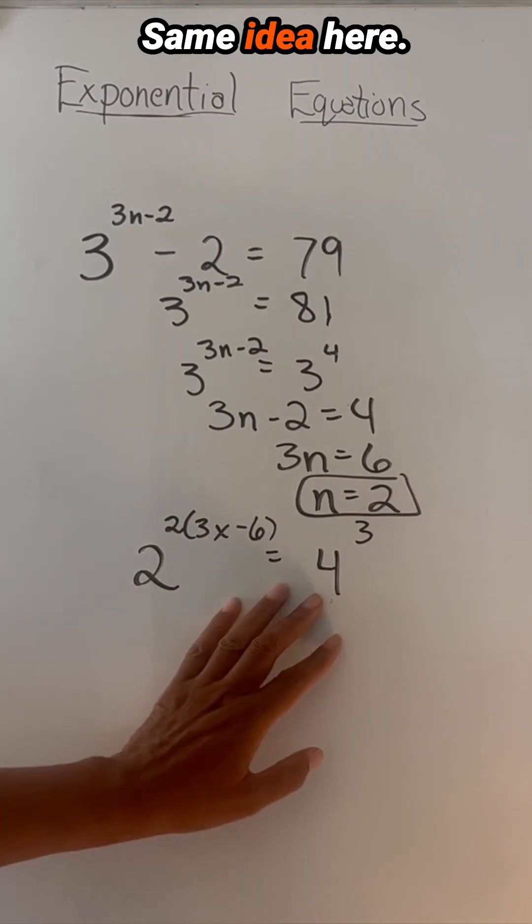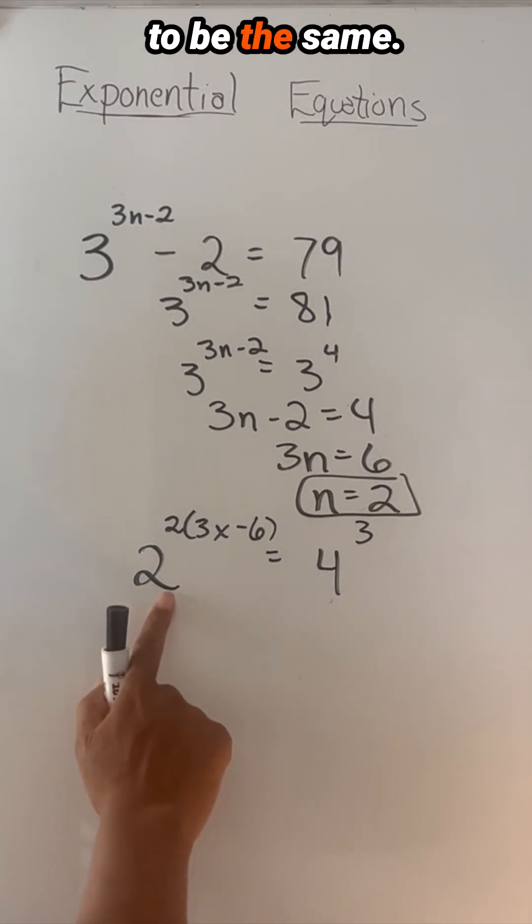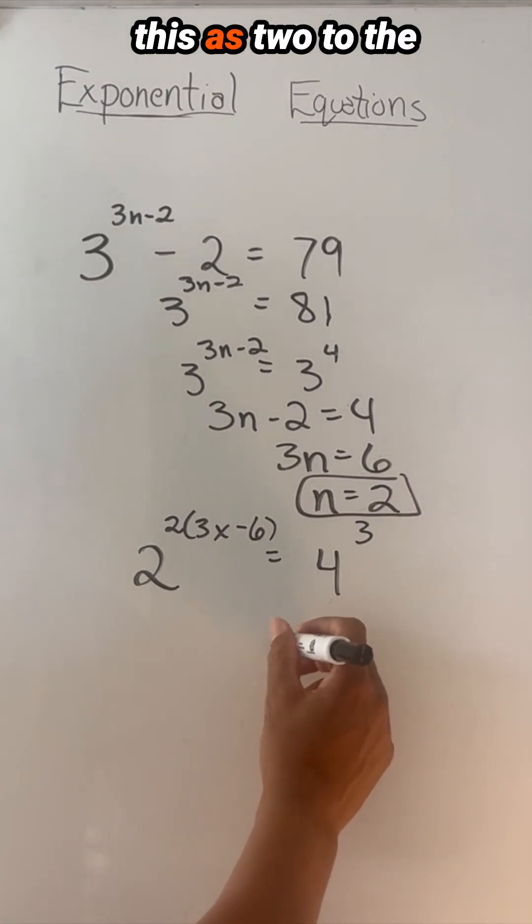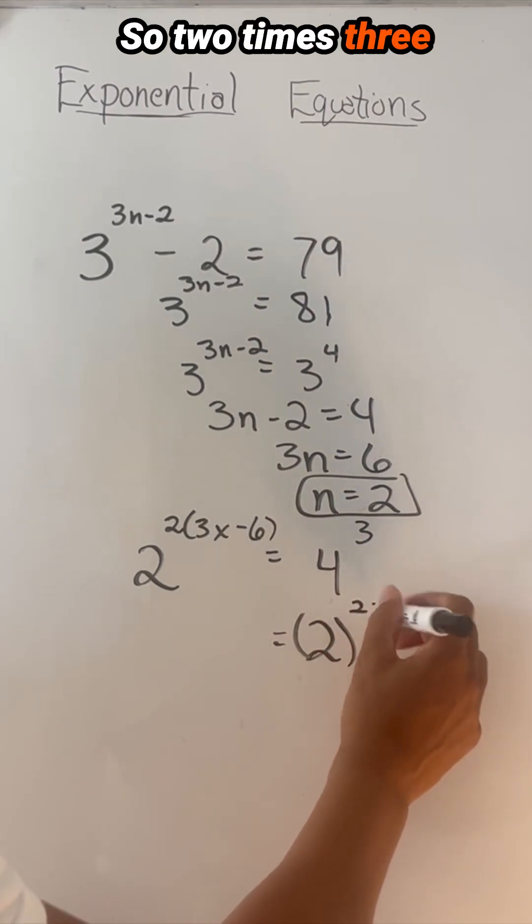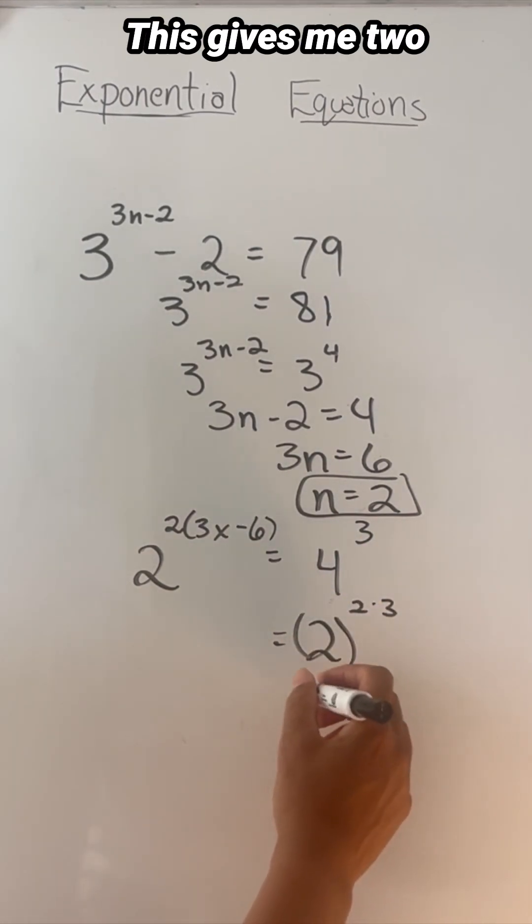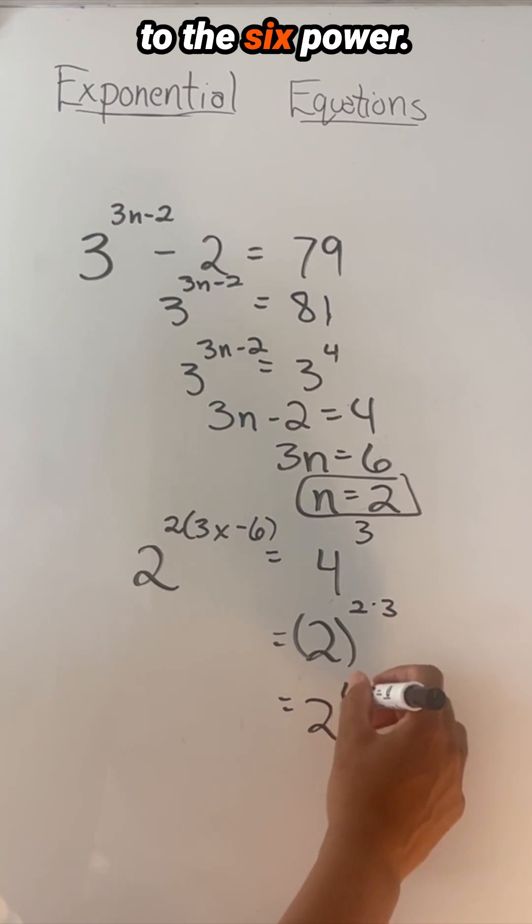Same idea here. We want to do the same thing. We want the bases to be the same. So I'm going to rewrite this as two to the second power. So two times three, we'll multiply those exponents together. This gives me two to the sixth power.